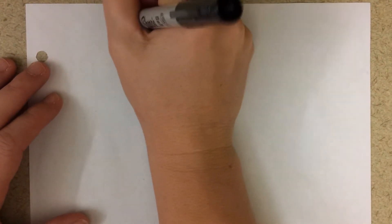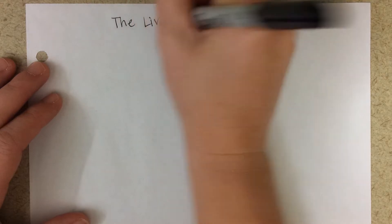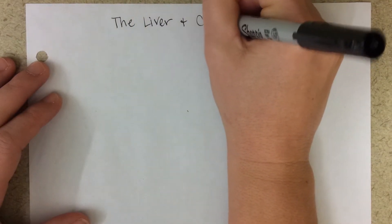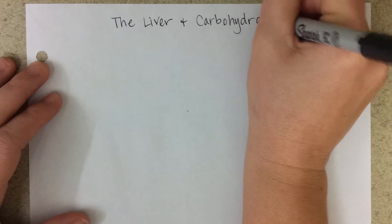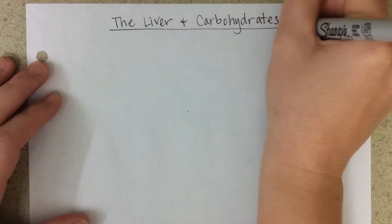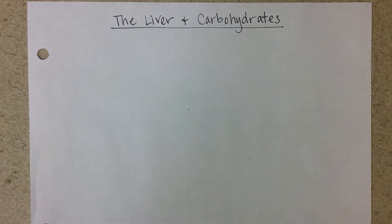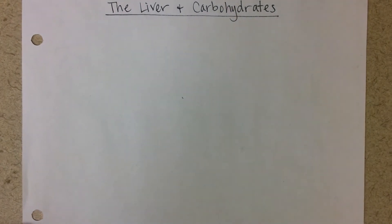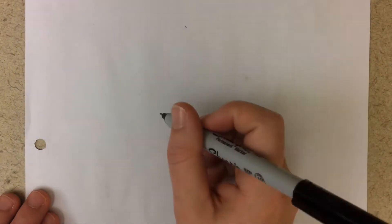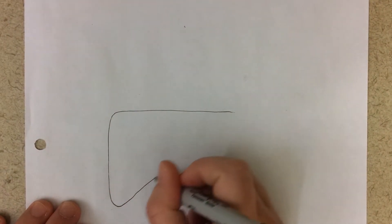The liver and carbohydrates. Let's see if you can draw a liver — just make a real simple one about the middle of your page. So there's the liver. What I want to show you in this page of your notes is just an overview of what the liver does with carbohydrates.